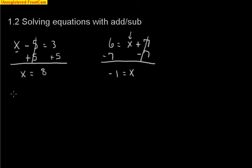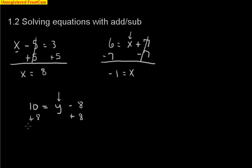One more: 10 equals y minus 8. We're solving for y — it's not a big deal that it's not x, we can pick any variable. What's happening to y? We're subtracting 8. So we add 8 to both sides. The 8 and negative 8 cancel, and y equals 10 plus 8, which gives me 18. That was section 1.2 — solving one-step equations by adding or subtracting to both sides.